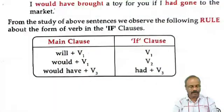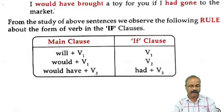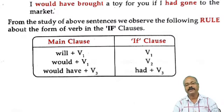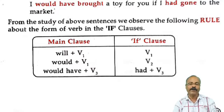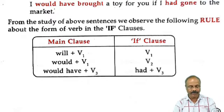From the study of the above sentences, we observe the following rule about the form of verb in if-clauses. There are two clauses: the main clause and the if-clause. In the main clause: will plus V1; would plus V1 (in the if-clause: V2); would have plus V3 (in the if-clause: had plus V3).